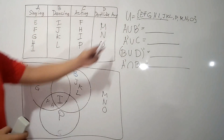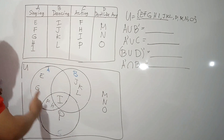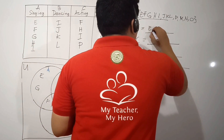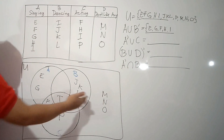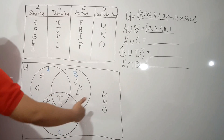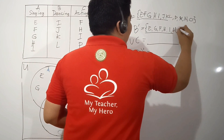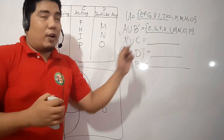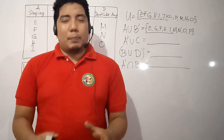Now let us find A union the complement of B. Our A contains E, G, F, H, and I. The complement of B means elements outside of B, which are M, N, O, and P. Since this is a union, we combine them — but do not write repeating elements. So the answer is E, G, F, H, I, M, N, O, and P.